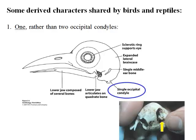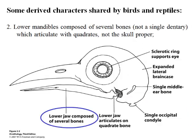Here are some of the derived characters shared by birds and reptiles. First, they have one rather than two occipital condyles — the skull rests on the atlas with a single condyle. Second, lower mandibles are composed of several bones, not a single dentary bone, and these bones articulate with the quadrates, not the skull proper — that's very reptilian.